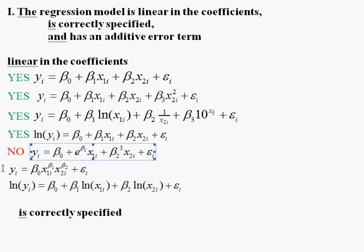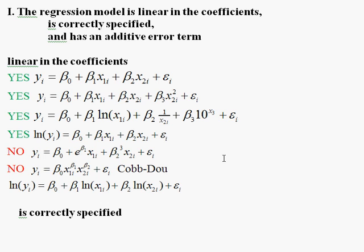Now another possibility, this is also a no. This is not linear in the coefficients because the slopes are, you take the explanatory variable and raise it to the power of the slope that you want to know. This equation is a famous type of equation named after a couple of economists called the Cobb-Douglas equation. The Cobb-Douglas equation is very common in economics, but you can't simply get these slopes beta 1 and beta 2 from that Cobb-Douglas function.